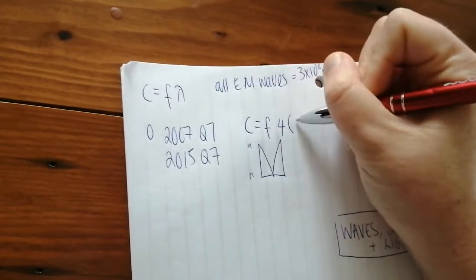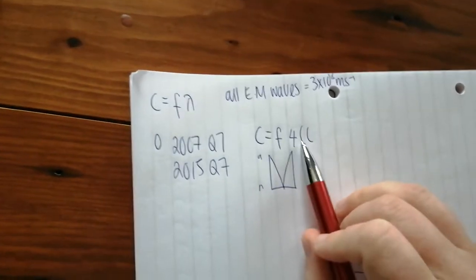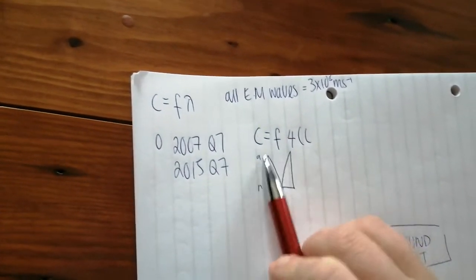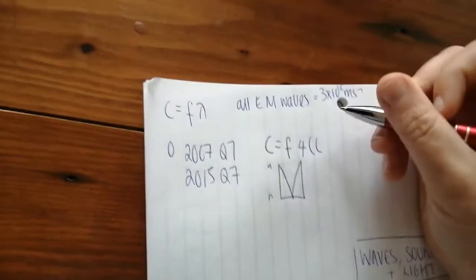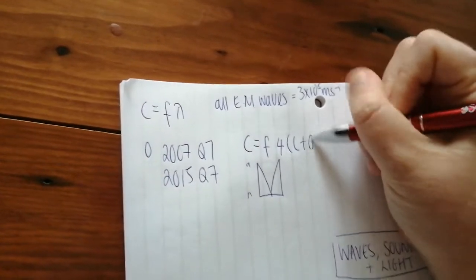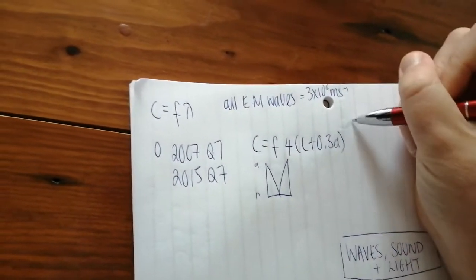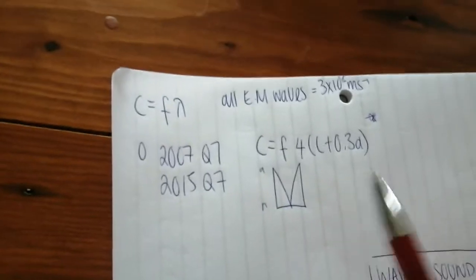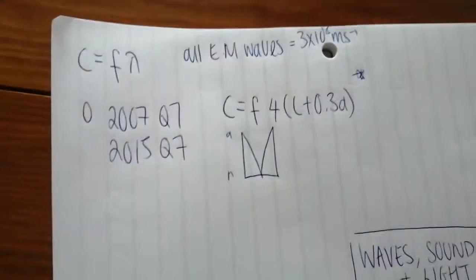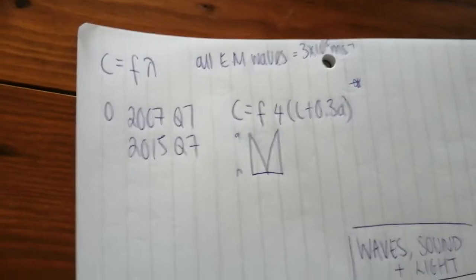So this length is quarter of a wavelength. So 4L would be your wavelength here, but you also have to take into account the size of the diameter of the pipe. So plus 0.3D. That has to be learnt off because it's not in the log tables and it's a mandatory experiment. So make sure you know it.